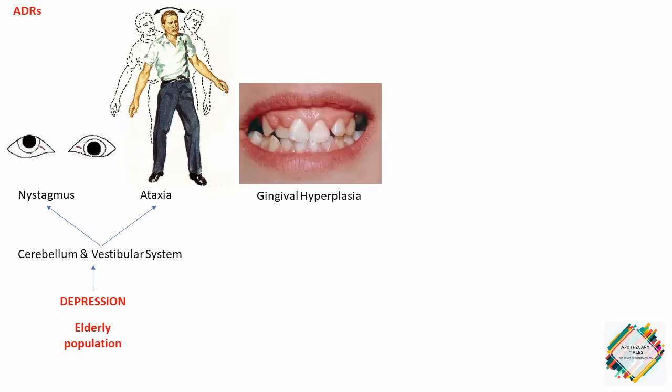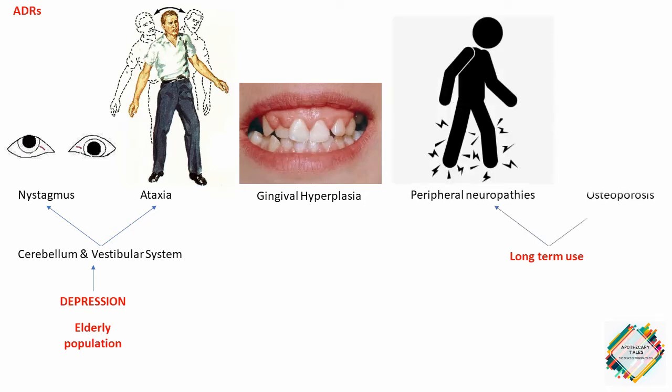Gingival hyperplasia may cause the gums to grow over the teeth. Long-term use may lead to development of peripheral neuropathies and osteoporosis. Although phenytoin is advantageous due to its low cost, the actual cost of therapy may be much higher considering the potential for serious toxicity and adverse effects.